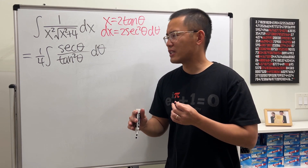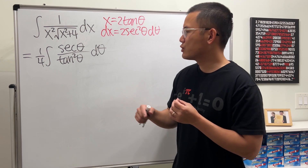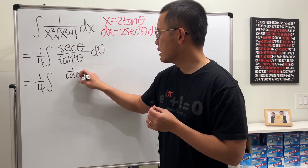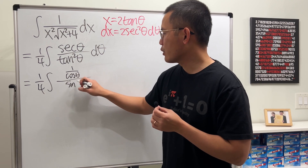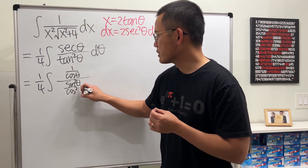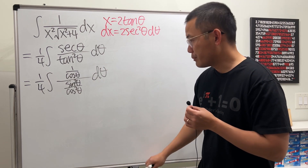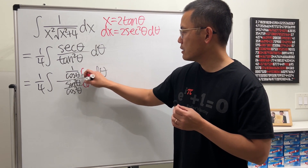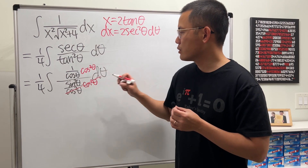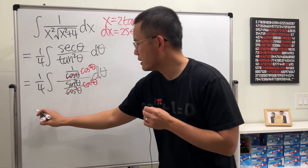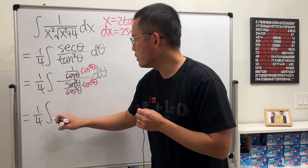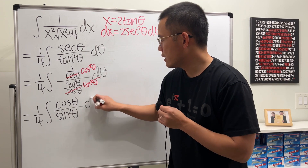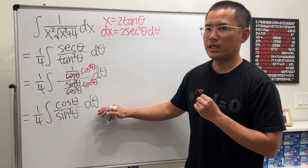A general strategy for trig integrals is to work with sine and cosine. Secant is 1 over cosine, and tangent squared is sine squared over cosine squared. We have a complex fraction, so multiply the top and bottom by cosine squared — those cancel completely, leaving cosine theta on top and sine squared theta on the bottom. So the integral is (1/4) times the integral of cosine theta over sine squared theta dθ.